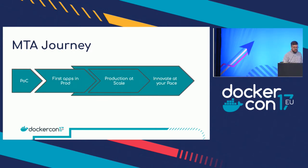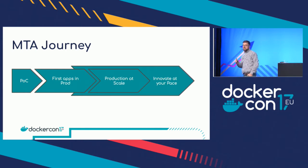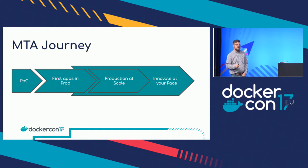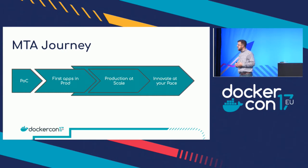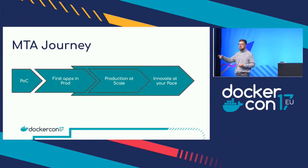Beyond the POC, what does that journey look like? The first step — based on customer feedback from large enterprise customers in the US, Europe, and Asia, as well as our largest enterprise partners — is to bring that application into production. Pick an app, prove it can be containerized and deployed in production. That builds the underlying foundation to continue to scale and accelerate, which is what we call production at scale. And then you can innovate at your pace, using that foundation to continue to innovate on that app.